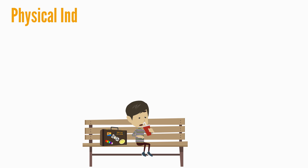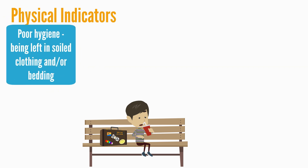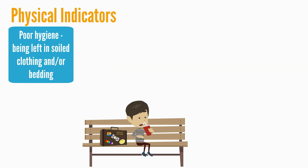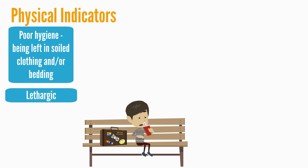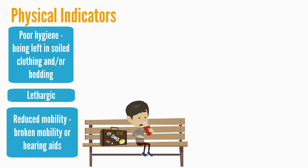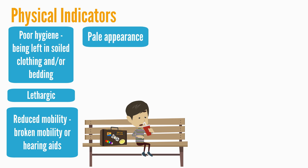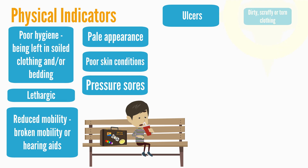Physical indicators can be poor hygiene, being left in soiled clothing and or bedding, lethargic, reduced mobility, broken mobility or hearing aids, pale appearance, poor skin condition, pressure sores, and ulcers.